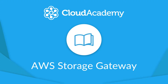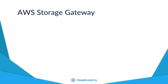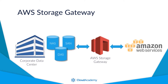Welcome to this lecture on AWS Storage Gateway. Storage Gateway allows you to provide a gateway between your own data center storage systems such as your SAN, NAS, or DAS and Amazon S3 and Glacier on AWS. The Storage Gateway is a software appliance installed within your own data center, allowing integration between your on-premise storage and AWS. This connectivity allows you to scale your storage requirements both securely and cost efficiently.